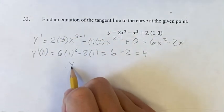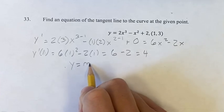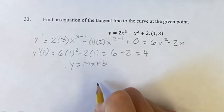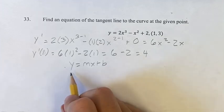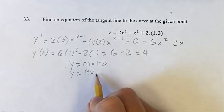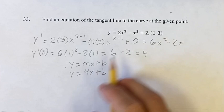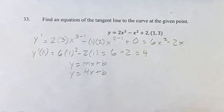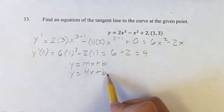So now if we have the general equation of a line, y equals mx plus b. m is the slope, b is the y-intercept. The slope we now know is 4. And if we plug in the x and the y that we have given from the point, we can solve for b.